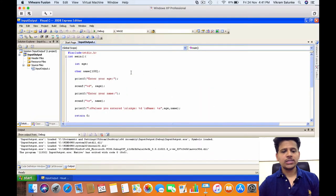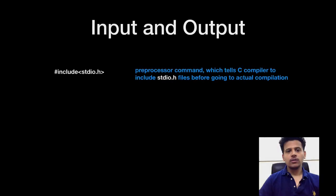So now let's look at what is this program doing. The first line is hash include stdio.h. It is a preprocessor command which tells the C compiler to include stdio.h file before going to actual compilation.